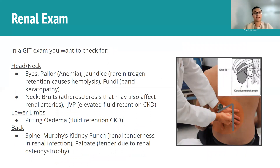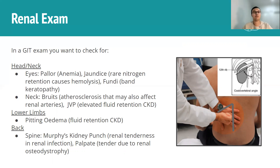Next up in the renal exam you move on to your head and neck. With the eyes, you'd look for pallor — paleness of the conjunctiva — as a sign of anemia, which we discussed occurs in CKD due to reduced erythropoietin production. You can rarely have jaundice occurring, but it's very unlikely. What can happen is when you have excess nitrogen being retained, it can lead to hemolysis and therefore pre-hepatic jaundice.